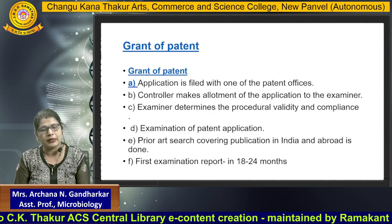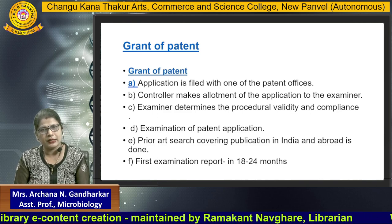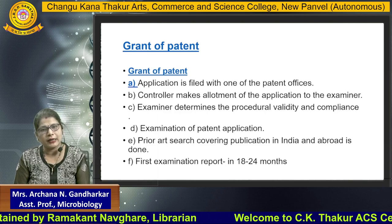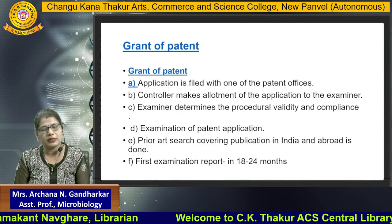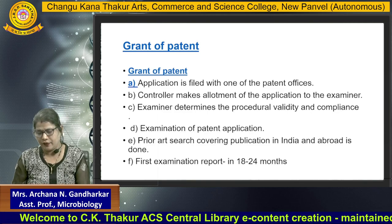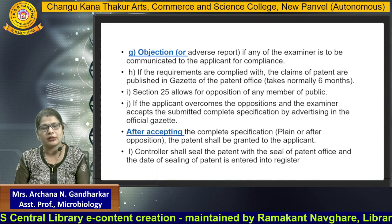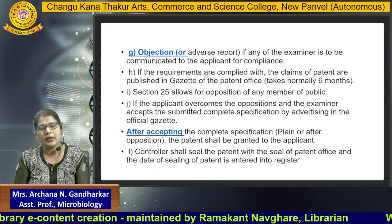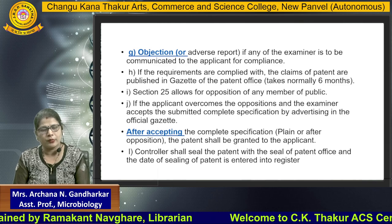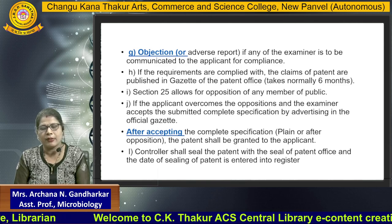How do you get the grant of the patent? First, you file the patent in a patent office. The controller makes the allotment of the application to an examiner. The examiner determines the procedure, validity, and compliance. An examination of the patent application is done, and a prior art search covering publications in India and abroad is conducted. The first examination report is issued within 18 to 24 months. Objections may then be raised. If the examiner communicates to the applicant and the requirements are compiled with, the patent is published in the official gazette of the patent office. Section 25 allows opposition by any member of the public, and if the applicant overcomes the opposition, the examiner accepts the submitted complete specification advertised in the official gazette.